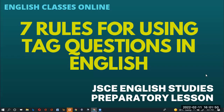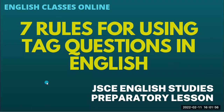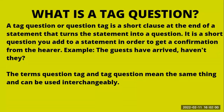Now, let's dive into today's lesson right away and look at the seven rules for using tag questions in English. First of all, what is a tag question? A tag question or question tag is a short clause at the end of a statement that turns the statement into a question. It is a short question you add to a statement in order to get a confirmation from the hearer. For example: 'The guests have arrived' — that is the statement — 'Haven't they?' — you make a statement and then you add a short question to it.